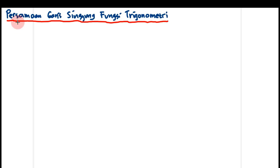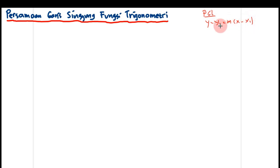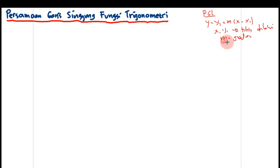Today we are going to talk about the function of trigonometry. We have discussed the function of trigonometry. Just remember the function of the structure of trigonometry. I will write in the formula as Y - Y1 = M(X - X1), and M is the gradient.